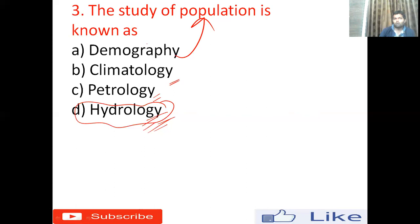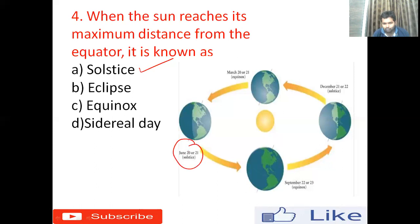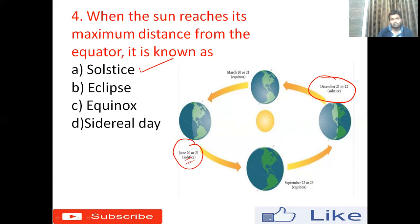Fourth question: When the sun reaches its maximum distance from the equator, it is known as — option A: solstice, option B: eclipse, option C: equinox, option D: sidereal day. The right answer is option A, solstice. There are two solstices — one around June 20th or 21st, when the sun is at maximum distance from the equator, and another around December 21st or 22nd.